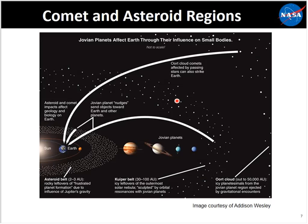The Oort cloud and the Kuiper belt are the ones that bring us comets. However, asteroids come from the asteroid belt, primarily located between 2 and 3 AU away. About 90 to 95% of the near-Earth asteroids come from the asteroid belt, and the Kuiper belt and Oort cloud produce about 5 to 10% of the comets that come very close to Earth. Really good answers, guys.